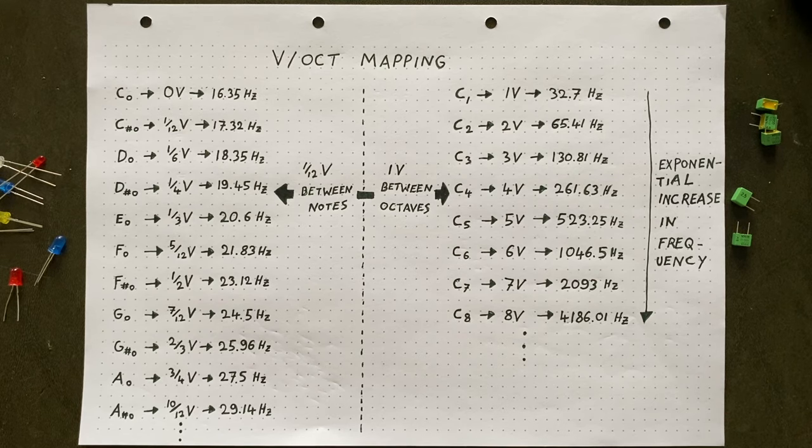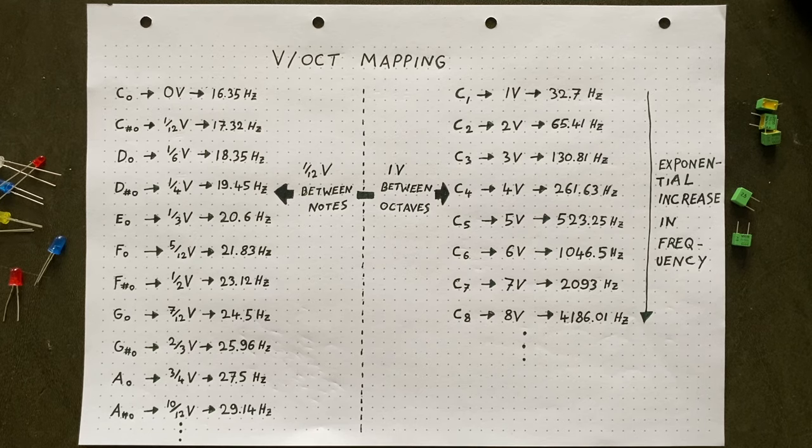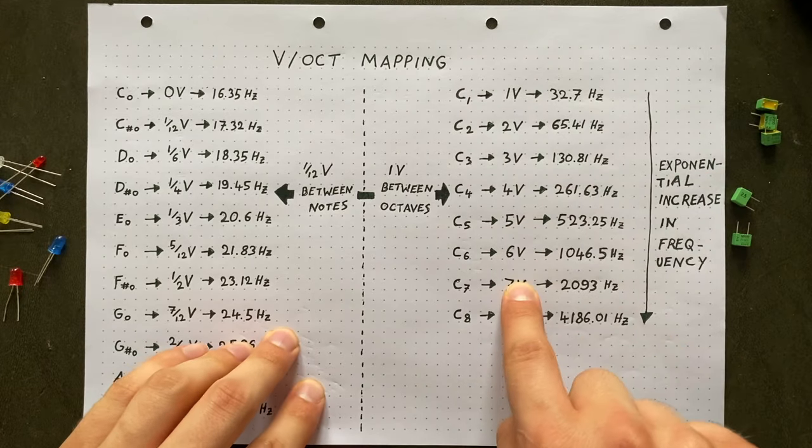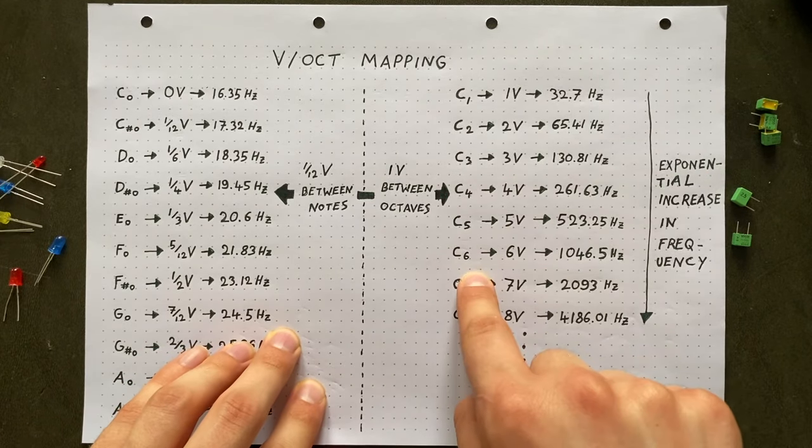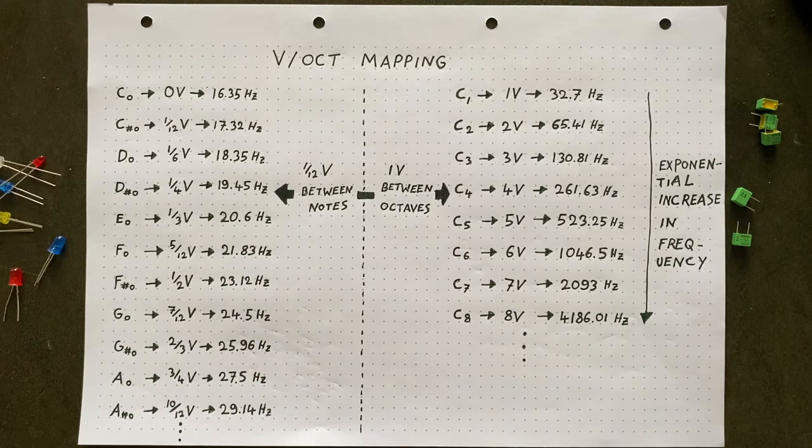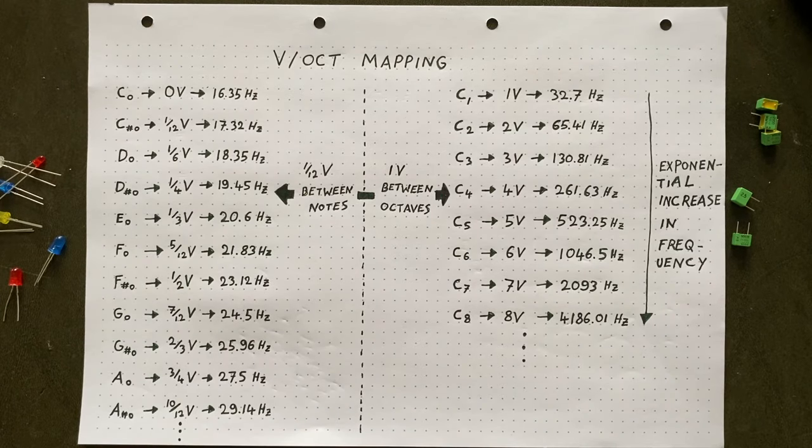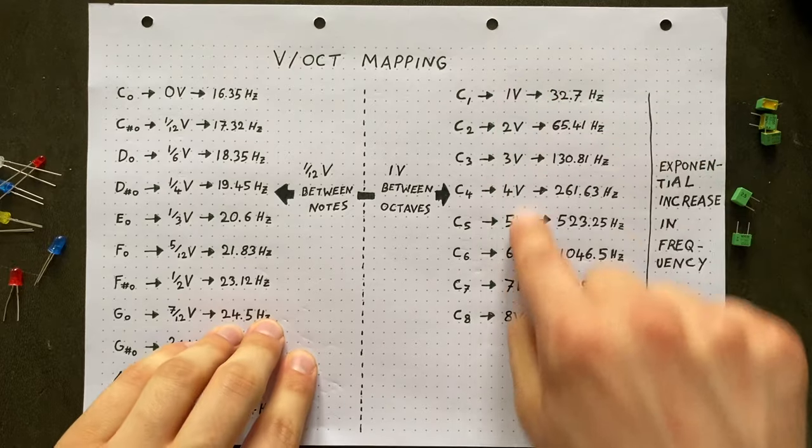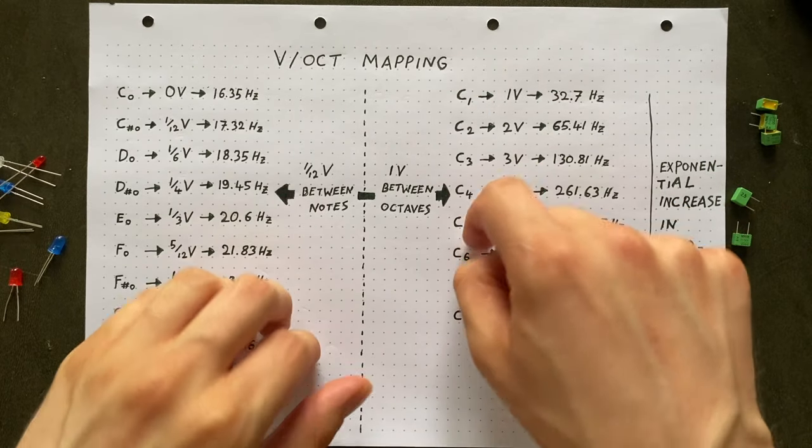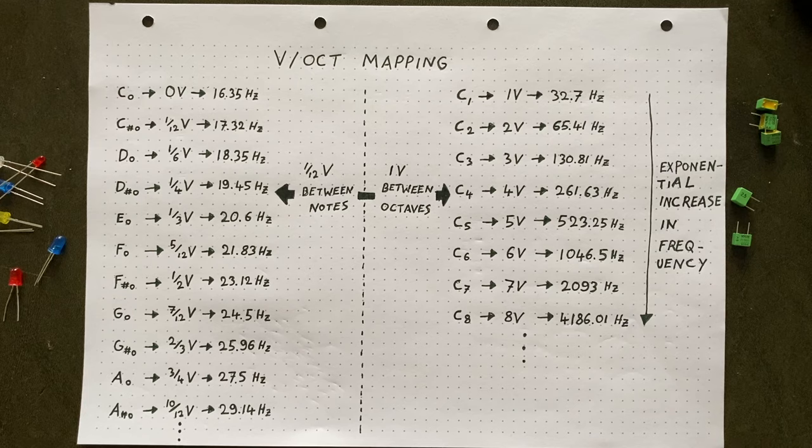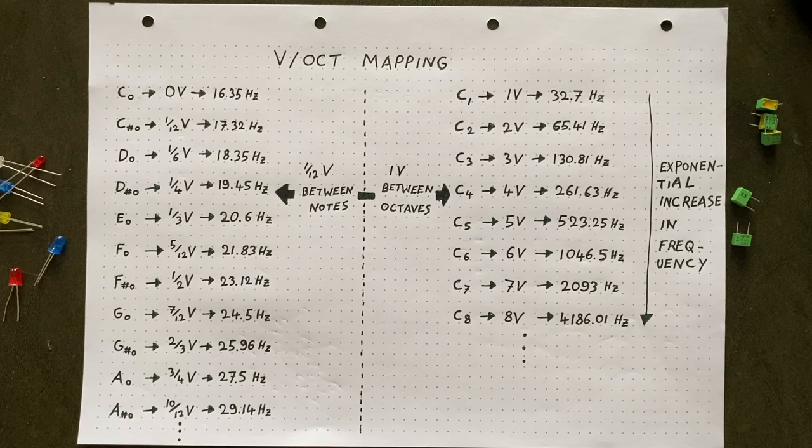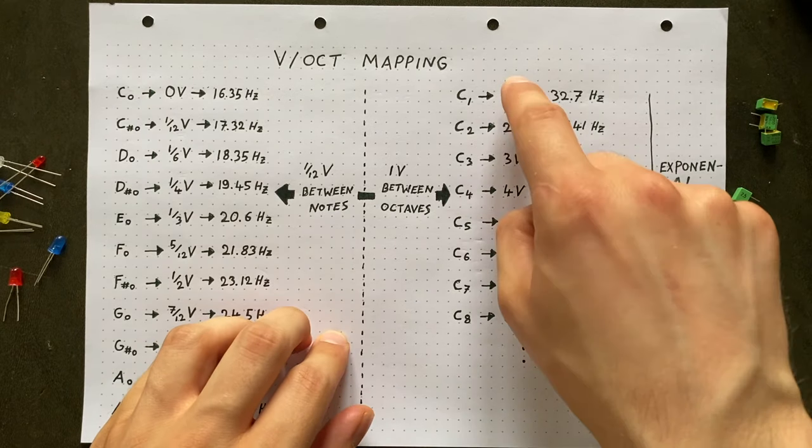Since we are trying to make our VCO conform to the volt per octave standard, we want to match voltages and frequencies like this. Whenever the voltage increases by one, our oscillator's pitch should go up one octave. To achieve this, the relationship between voltage input and frequency output also needs to be exponential, because we are basically mapping voltages to notes. And because our oscillator's pitch is determined by how open our transistor is, we would need that transistor to open up exponentially as the voltage at its base increases linearly.